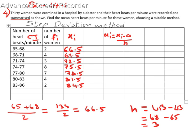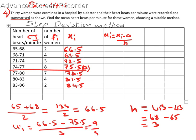Now to find ui, firstly we have to consider any one class as the assumed mean a. I am taking 75.5 as the assumed mean. So ui is equal to xi minus a by h. For the first class: 66.5 minus 75.5 by 3, that is minus 9 by 3, we get minus 3. In the same way, the next values will be minus 2, minus 1, then 0 corresponding to the assumed mean.